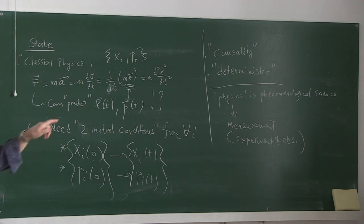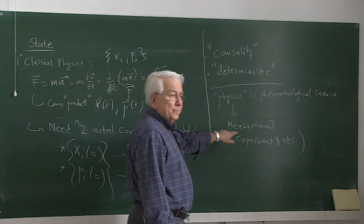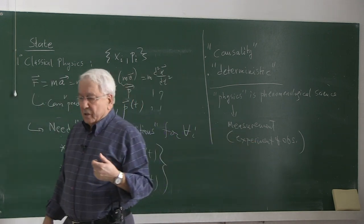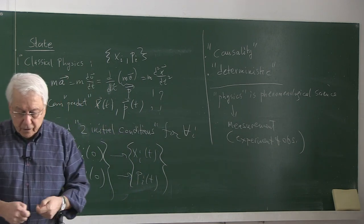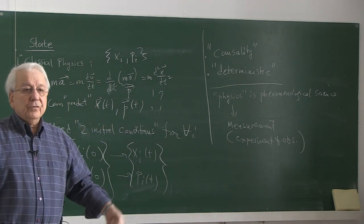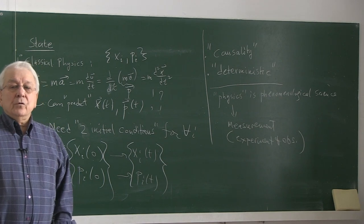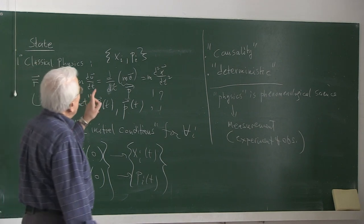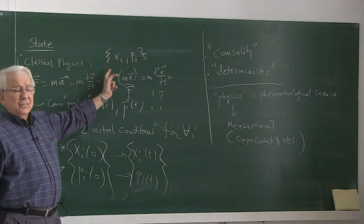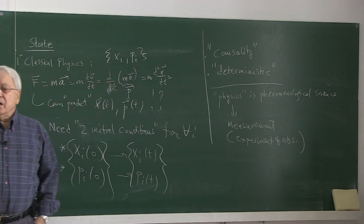Why is that so? It must be based on measurement. We carry out measurement in classical physics as well — we have rulers, chronometers, thermometers, et cetera. How do we know that measurement gives precise and exact information in classical physics but not in quantum theory?